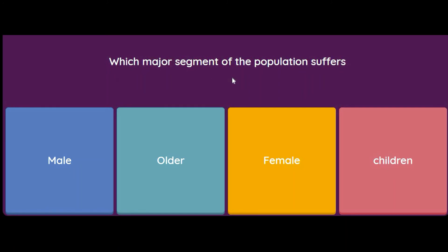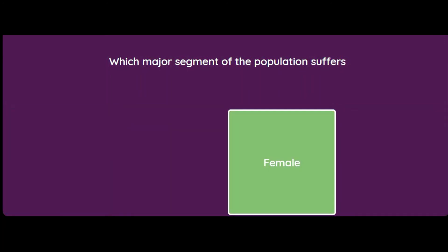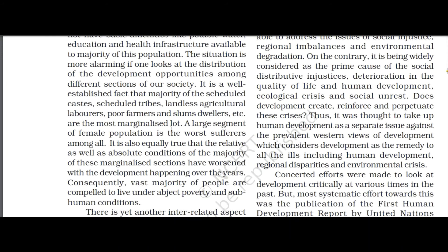Which major segment of the population suffers the most — male population, older population, female population, or children population? Unfortunately, the answer is the female population, which suffers the most. As referenced in the book: a large segment of the female population is the worst sufferer among all. It is also equally true that the relative as well as absolute condition of the majority of these marginalized sections has worsened with development happening over the years.